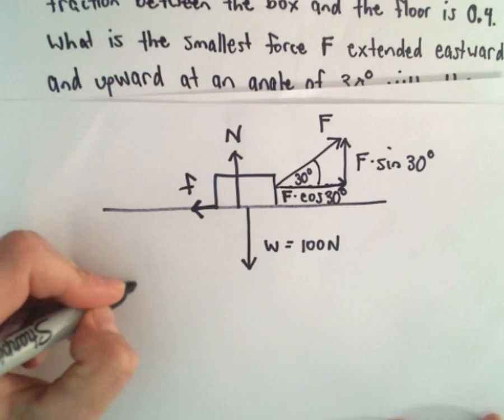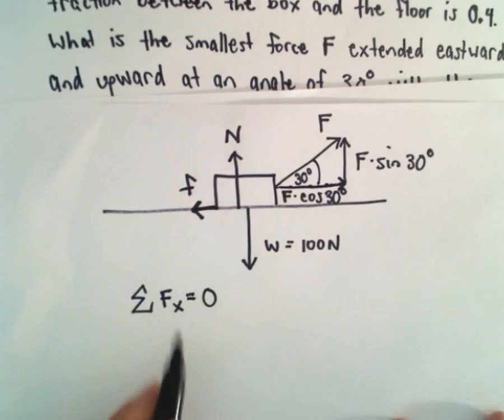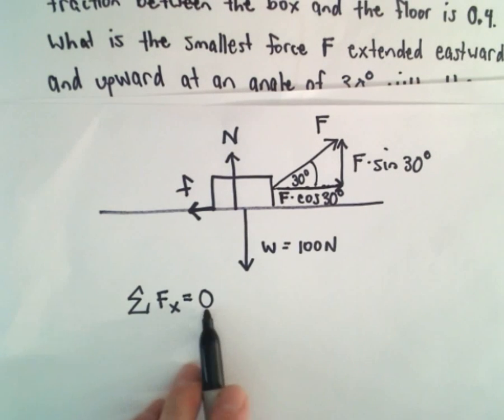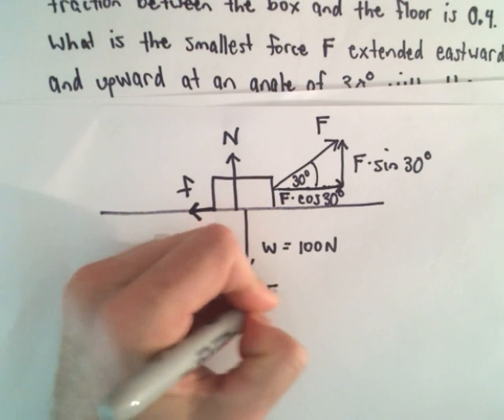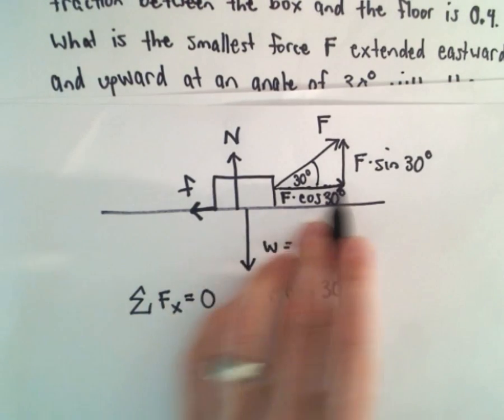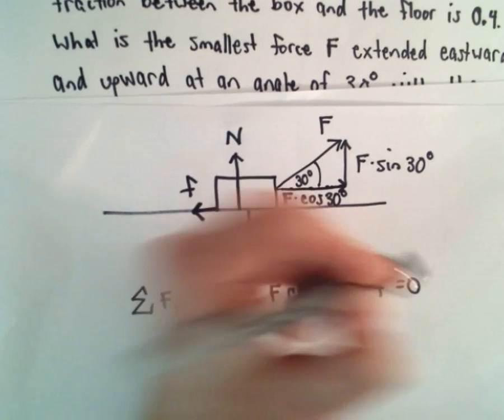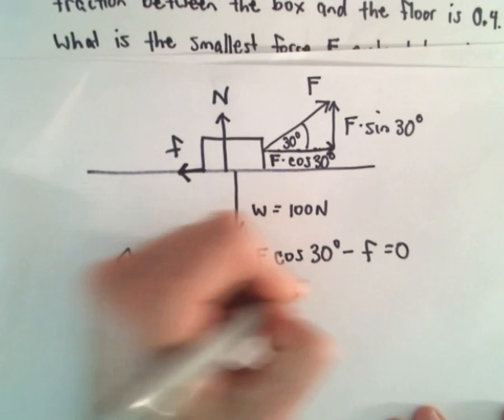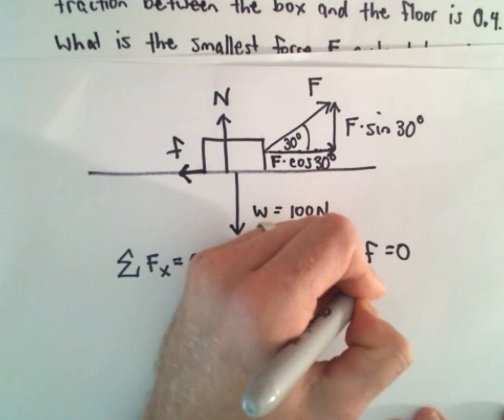Okay, so if we take the forces acting in the horizontal direction and set those equal to zero, what we're going to get is F times cosine of 30 degrees, so that's the force acting to the right, minus little f, that's going to equal zero. So we've got that F times cosine of 30 degrees, capital F cosine of 30 degrees, that's going to equal little f.